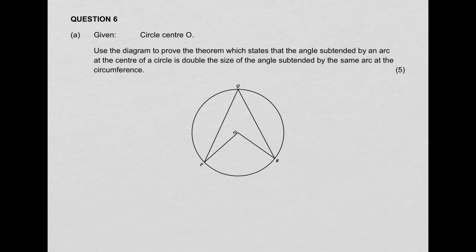Question 6a: given circle center O, use the diagram to prove the theorem — so this is bookwork that you've learned, which you can do straight from your textbook. The proof is for the theorem that states the angle subtended by an arc at the center is double the size of the angle subtended by that same arc at the circumference. I'm not going to do the proof here — look directly in your textbook or exercise books.